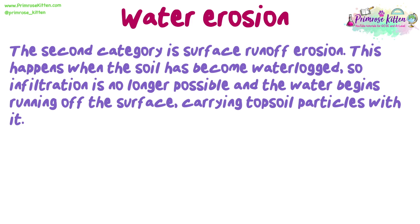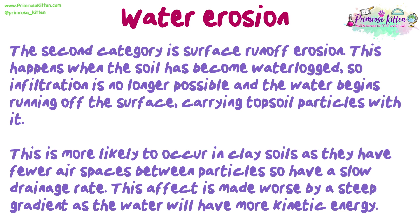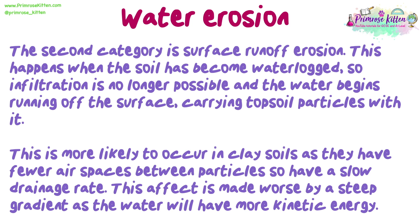The second category is surface runoff erosion. This happens when the soil has become waterlogged, so infiltration is no longer possible and the water begins running off the surface, carrying topsoil particles with it. This is more likely to occur in clay soils, as they have fewer air spaces between particles, so have a slow drainage rate. This effect is made worse by a steep gradient, as the water will have more kinetic energy. On a slope, the increased mass of soil from the water it is retaining, alongside the lubrication that the water provides, can lead to landslides, which can smother areas downhill.